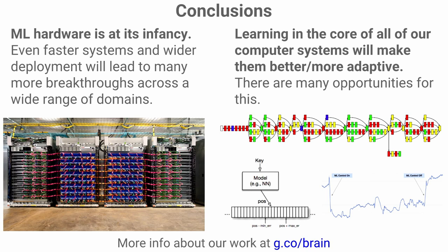In conclusion, two things. First, machine learning hardware customized for the operations we want to run at scale for very large models on very large data sets is really at its infancy and is going to be an exciting time in the next five to ten years. Specialization and focusing on this narrow set of operations will allow a lot of creativity in computer architecture, whereas Moore's Law improvements were much more about the process. Second, learning in the core of our computer systems will improve them tremendously and make them more adaptive—we won't have these performance cliffs that happen when usage patterns don't match hard-coded heuristics.